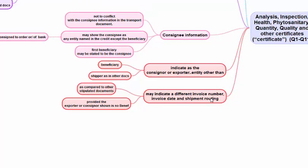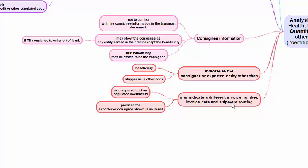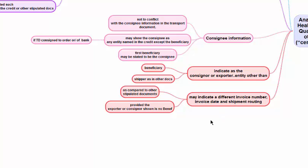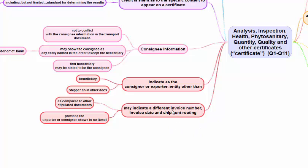The certificate may indicate a different invoice number, invoice date, or shipper. If the goods and the certificate have been procured by the beneficiary of the LC for submission under the credit, it will have an invoice number not relevant to the underlying sale — perhaps from a back-to-back or transferable credit situation. The documents presented under the LC will carry the beneficiary's own invoice with a different number. This different invoice number, date, or routing is acceptable, provided the exporter or consignor shown is not the beneficiary of the credit. If the certificate shows the beneficiary as the exporter, then it cannot have a different invoice number, date, or routing.